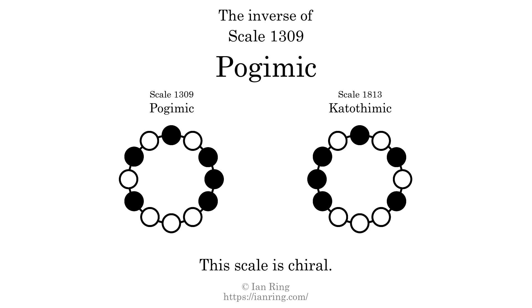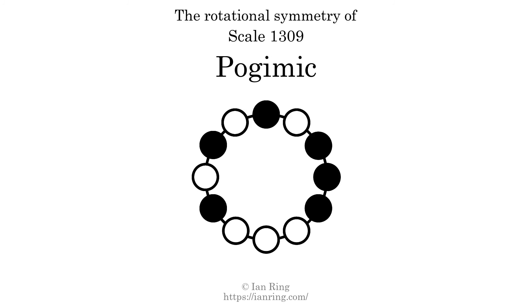The inverse of a scale is a mirror image — it is what you get when the sequence of intervals is reversed. The inverse of this scale is scale 1813, also known as Catathemic. This scale is chiral; it cannot transform into its inverse by rotational transformation. This scale has no rotational symmetry. For even more detail about this scale, visit ianring.com/musictheory/scales/1309.